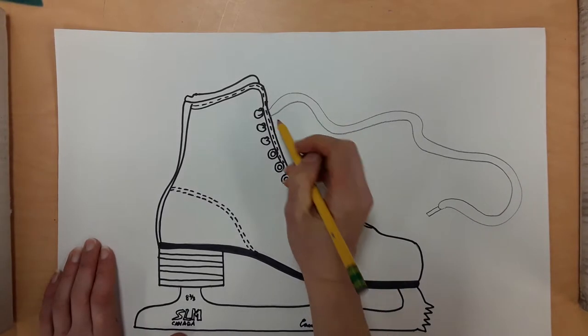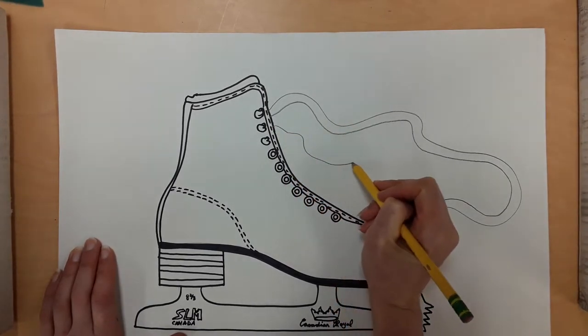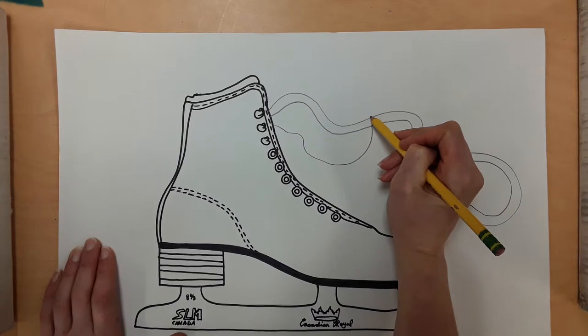Start at an eyelet or a hook. Draw a wiggly line. You can make it overlap with the first line.